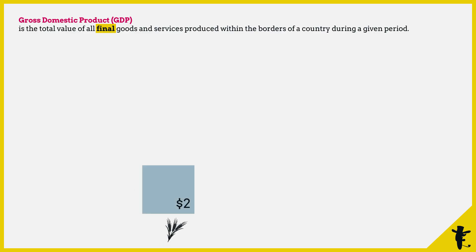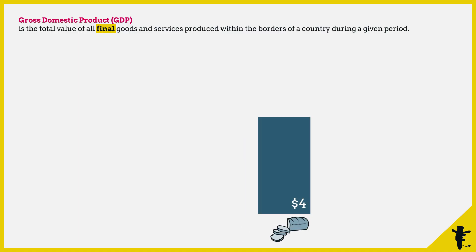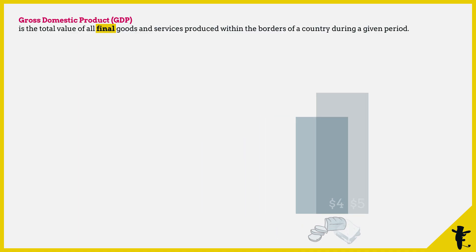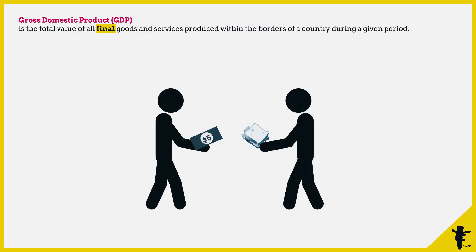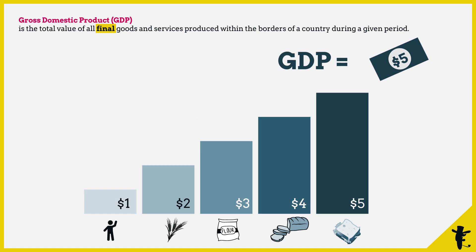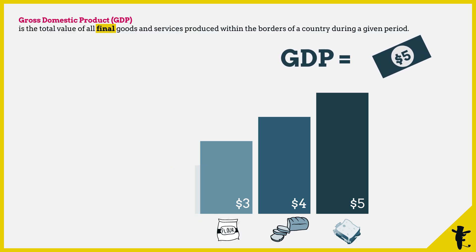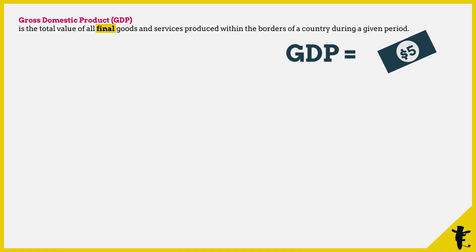First, we need labour to harvest wheat. Then, wheat goes into the production of flour. Flour goes into the production of bread. And bread goes into the production of sandwiches. We then sell the sandwiches at $5. This $5 already includes the value of labour, flour, wheat, and bread that went into the production of the sandwich — we don't have to add these things again.